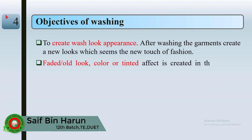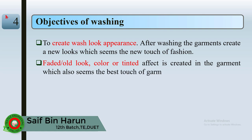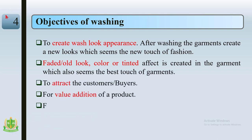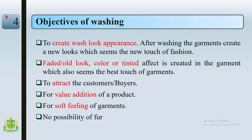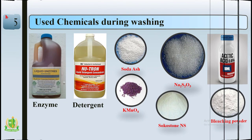The objectives of garment washing are: to create a washed-look appearance; after washing, garments create a new look which gives a new touch of fashion; a faded or old blue color or tint effect is created in the garment; to attract customers or buyers; for addition of value on a product; for soft feeling of garments; and no possibility of further shrinkage of washed garments.